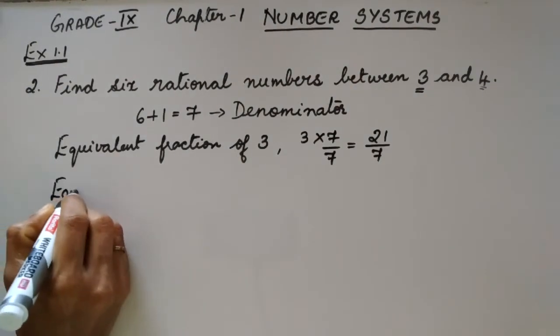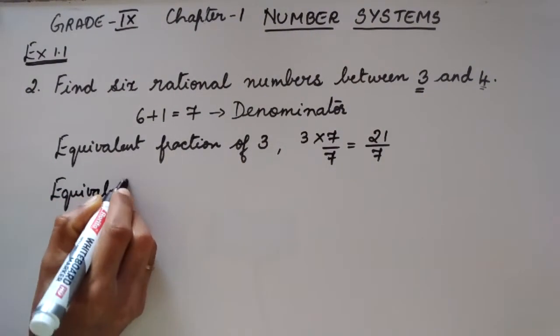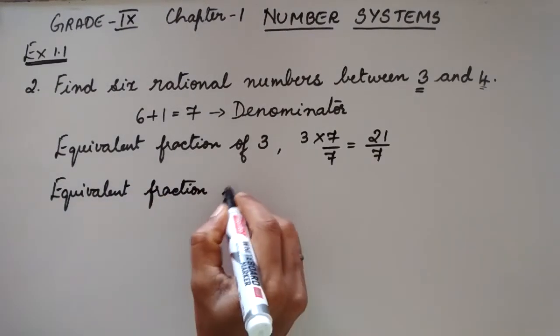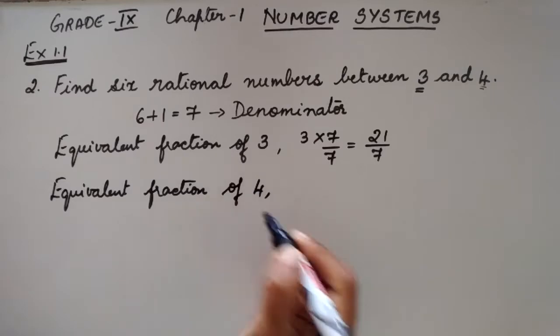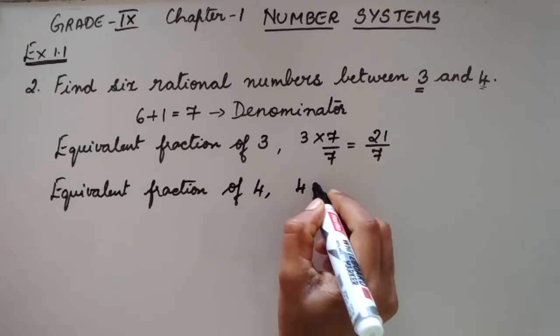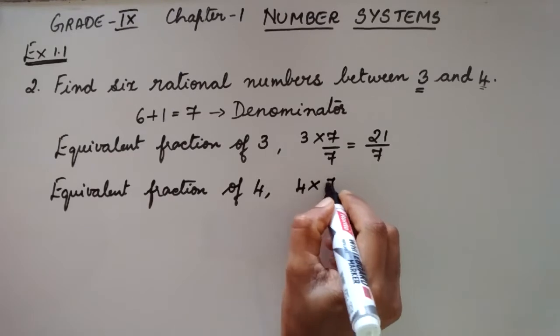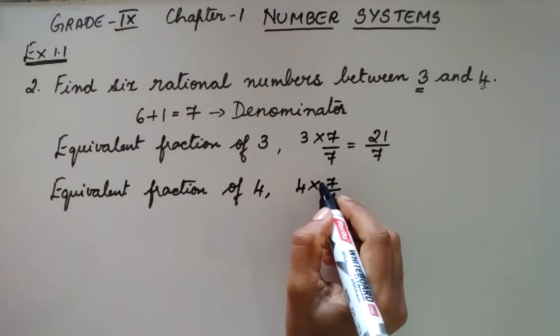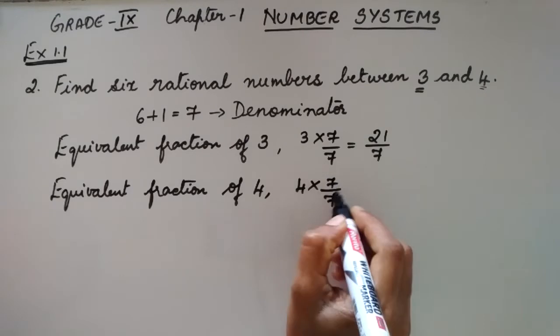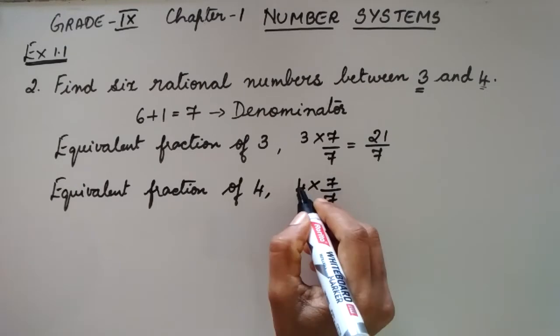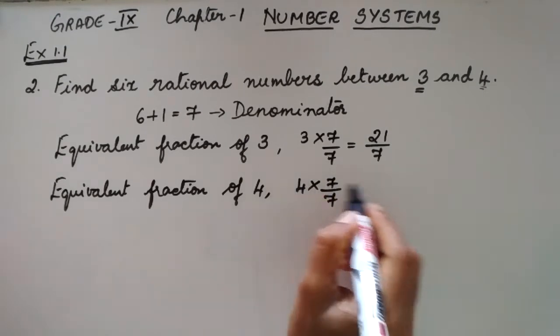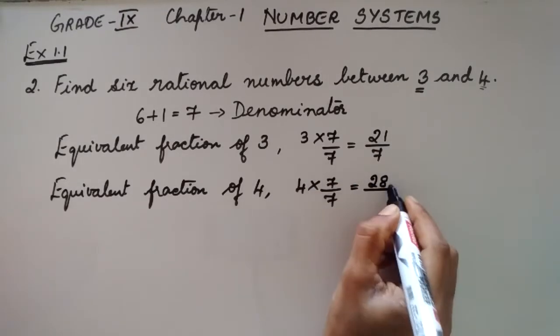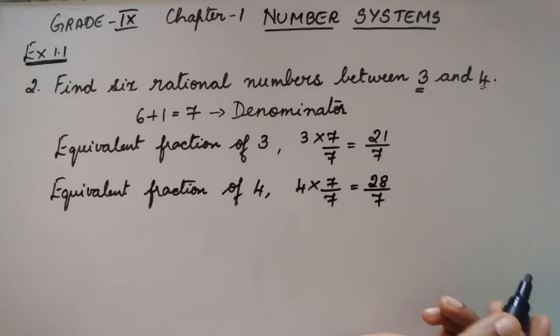Next, let us take the equivalent fraction of 4. That will be 4 into 7 by 7. That is, we need to multiply and divide 7 with 4, which is equal to 4 times 7 is 28 divided by 7.